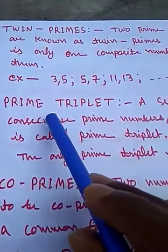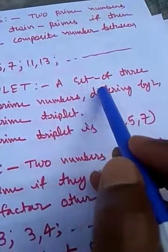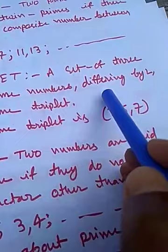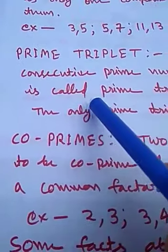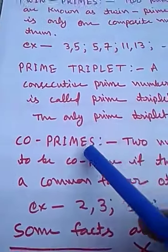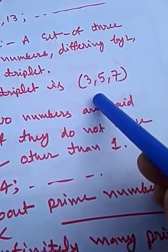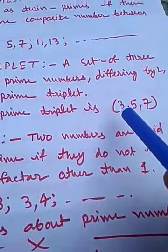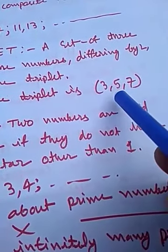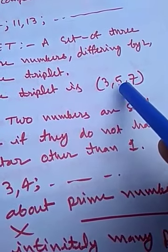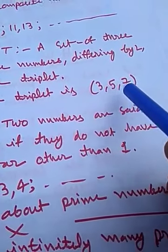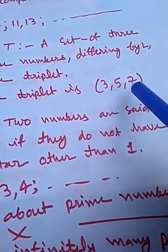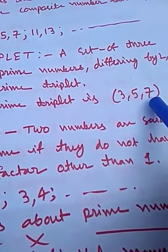There is only one prime triplet, which is 3, 5, and 7. These are three consecutive prime numbers that differ by 2. The difference between 5 and 3 is 2, and the difference between 7 and 5 is also 2. So 3, 5, 7 are consecutive prime numbers and form the prime triplet.